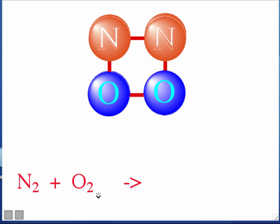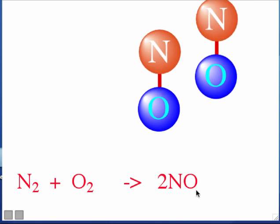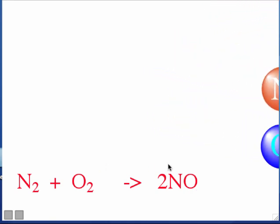The new molecules that get formed are called the product molecules. You write down the product molecules after the arrow. Since there are two product molecules of NO, you write 2NO — write the molecular formula of one molecule, NO, and put a big number in front. So this chemical reaction is written: N₂ + O₂ → 2NO. Write down the reactants with a plus sign between them, an arrow, and then the product molecules.